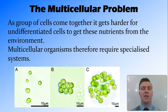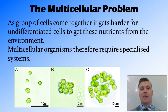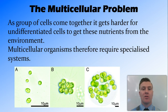For single-celled organisms, it's easy for them to get the nutrients that they need. For example, the sugar and the oxygen into the cell — into the cytoplasm of the cell to get to the mitochondria. These nutrients can diffuse through the cell membrane.